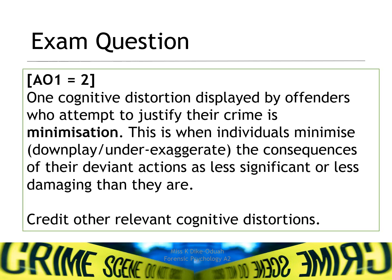Here's an example answer: one cognitive distortion displayed by offenders who attempt to justify their crime is minimisation. This is when individuals minimise the consequences of their deviant actions as less significant or less damaging than they are. You might want to use a different word — downplay or under-exaggerate are equally fine.